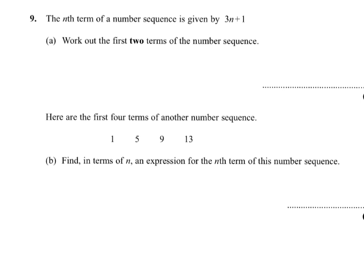The nth term of a number sequence is given by 3n plus 1. Work out the first two terms of the number sequence. So what we do to get the first term is replace the n with a 1. So what that actually means is 3 times 1. I don't really need to write the times, but I'll put it in case you weren't sure.